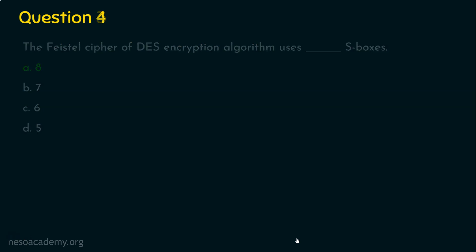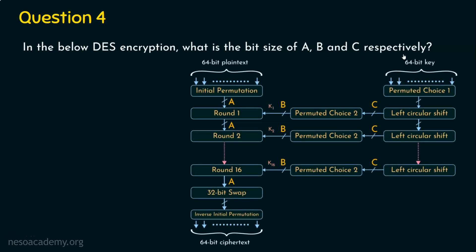And coming to question number 4. The question is: In the below DES encryption algorithm, what is the bit size of A, B and C respectively? We are given with the DES encryption diagram and we are required to find the size of A, B and C. Let's see the options first. Option A, 48, 56, 64. Option B, 64, 56, 48. Option C, 64, 48, 56. And Option D, 64, 48, 64. I request you to pause this video for a while and think about the right answer.